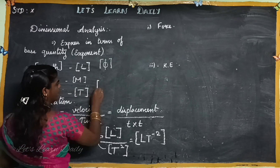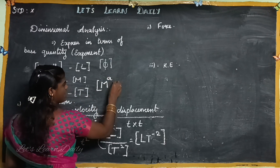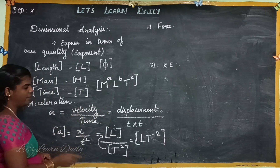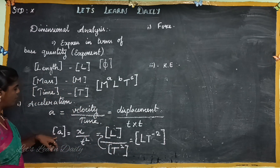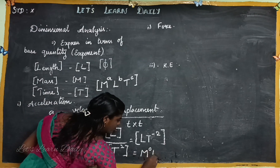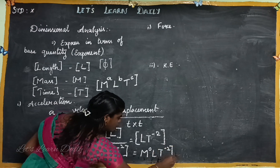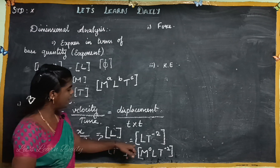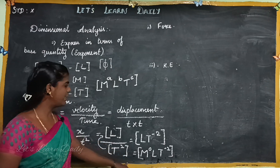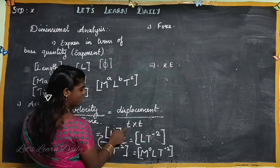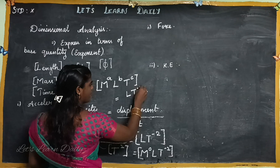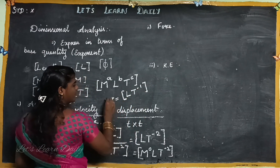So this is the dimension of acceleration. Since mass is not involved, it is M⁰ L¹ T⁻². The power of L is 1. This is the acceleration dimension. For velocity, it is displacement by time taken, which gives L T⁻¹. This is the velocity dimension, represented with square brackets around the physical quantity.